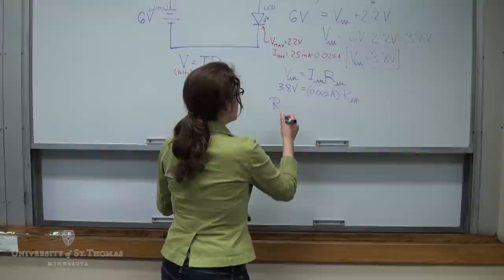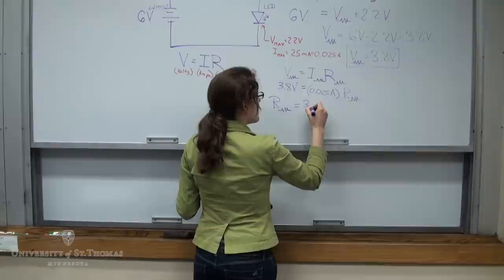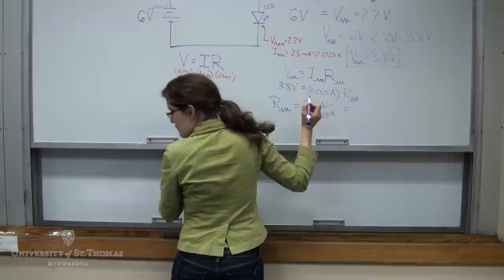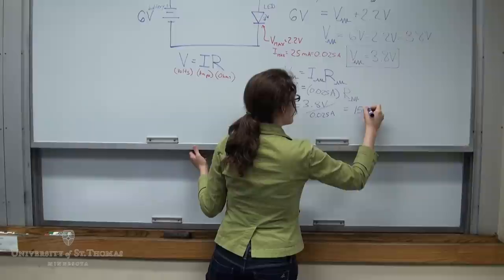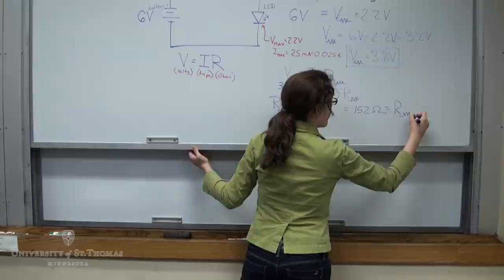So then we can say that the R across the resistor, I'll push this up a little bit, the R across the resistor has to be equal to 3.8 volts divided by 0.025 amps. And when we calculate that, we get 152 ohms. So that has to be the resistance of the resistor we put in the circuit before the LED.